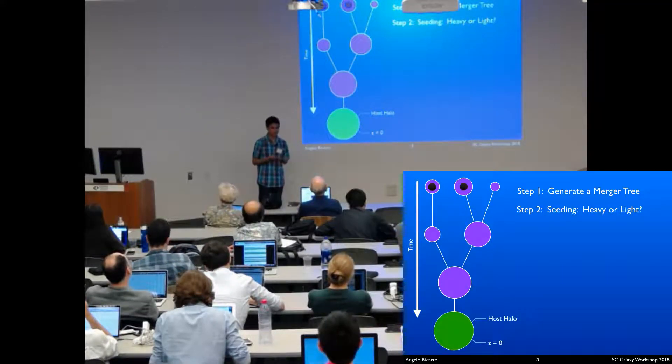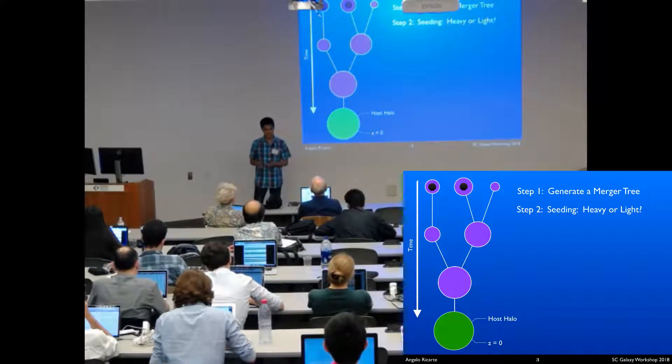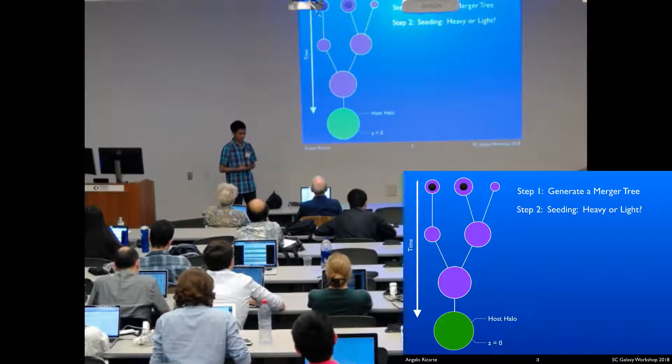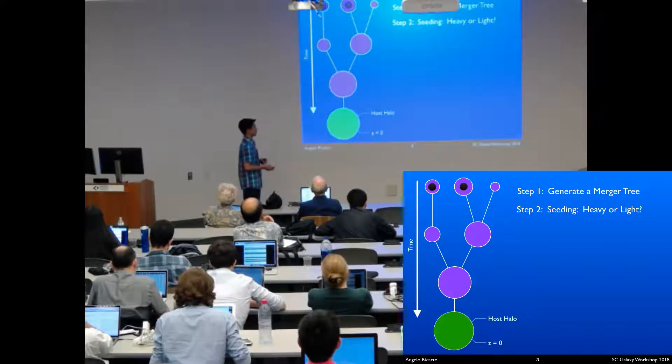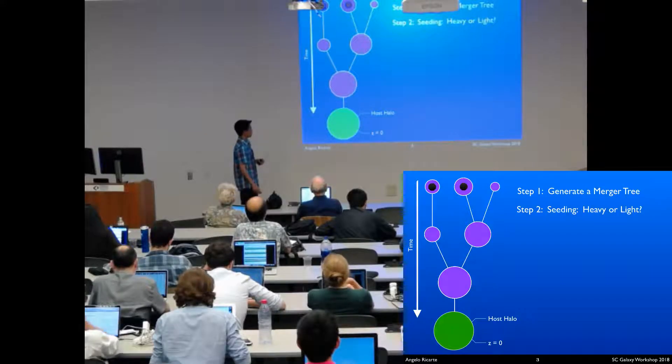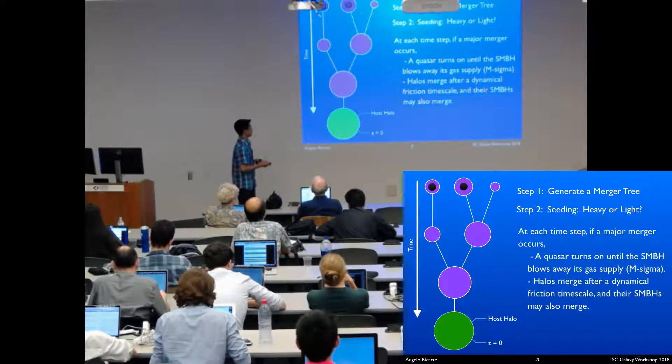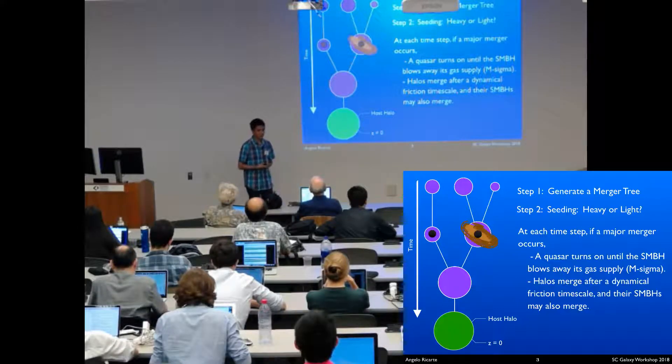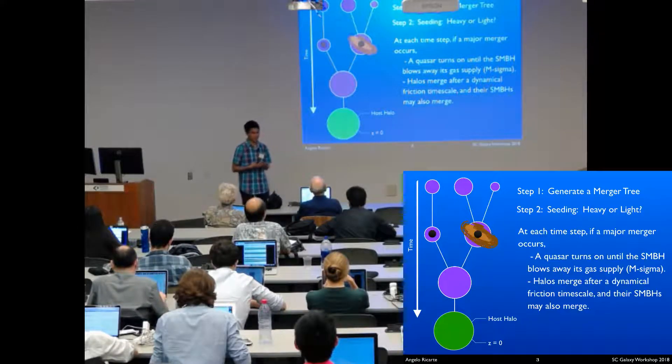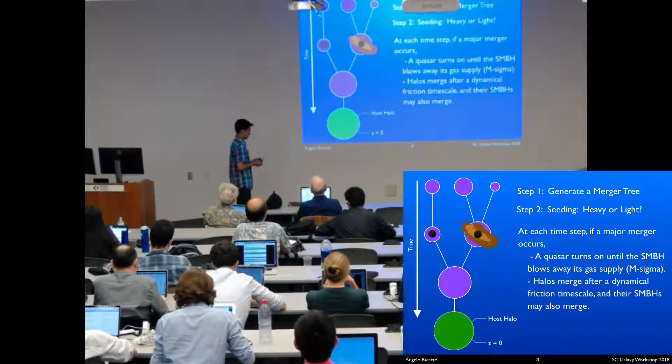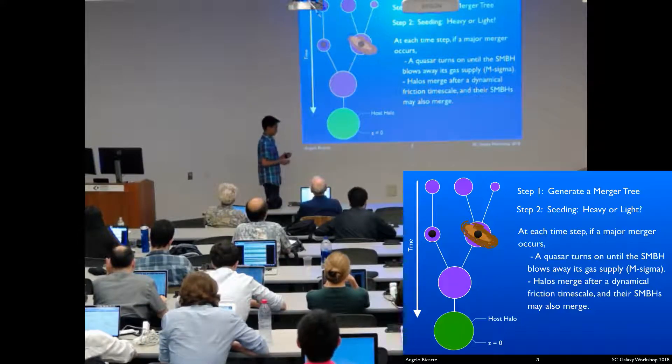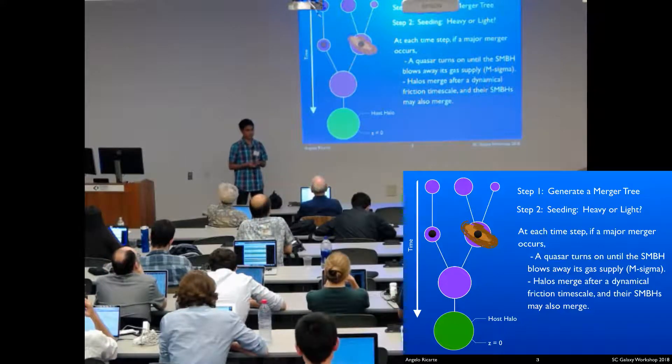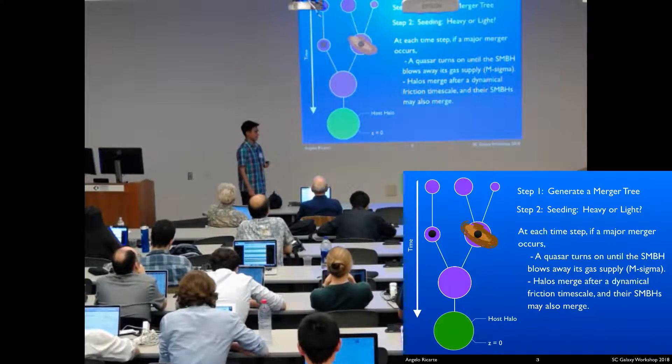I'll be talking about differentiating between heavy seeds, the direct collapse case versus light seeds from Pop IIIs. I'm not going to talk about the intermediate case from merging clusters of stars, which should probably fall between the results from these two models. Every time a major merger occurs in this model, we say that a quasar turns on until that supermassive black hole blows away its gas supply. We say that happens when it reaches some maximum mass given by the M-sigma relation. Naturally, we do land on M-sigma by z equals zero as expected.